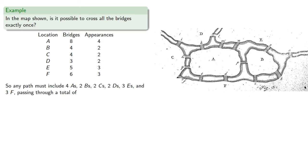And so any path must include four A's, two B's, two C's, two D's, three E's, and three F's. This requires 15 bridges, and since we have 15 bridges, a path crossing each bridge exactly once is possible.